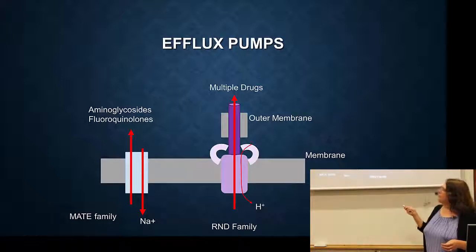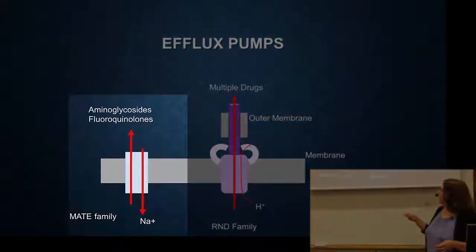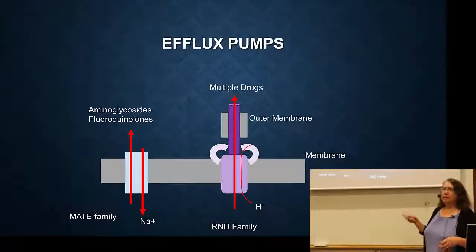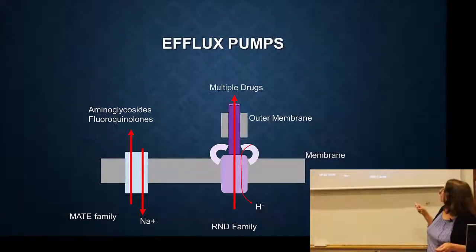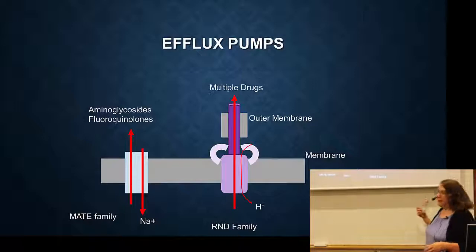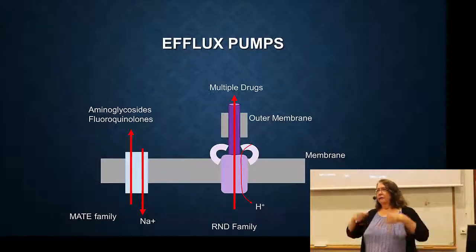The terrible thing about efflux pumps is they often recognize more than one antibiotic. For example, this family of efflux pumps pumps out both aminoglycosides and fluoroquinolones. Aminoglycosides target the ribosome, and the RND family handles multiple drugs and pumps them out of the cell. This is problematic because acquiring one of these pumps makes you resistant to many things all at once.